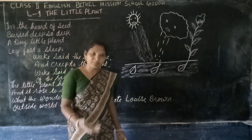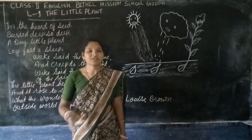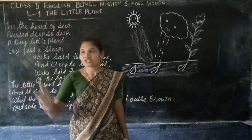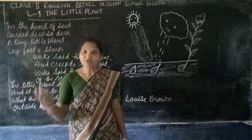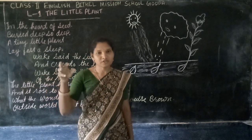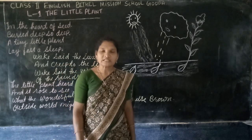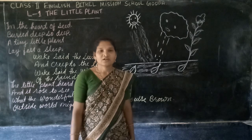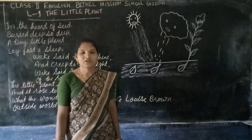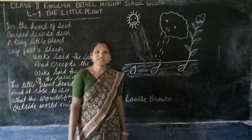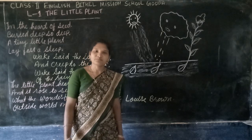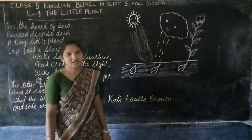Children, have you seen a plant? How does that plant grow? In your house, around your house, you might have seen big, big trees. How did those trees become big? Were the trees always that big, or were seeds planted? How does a seed grow? From this poem, the poet is going to tell us how a small seed becomes a big plant.